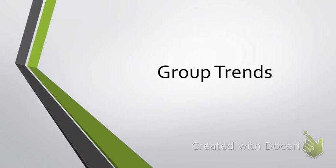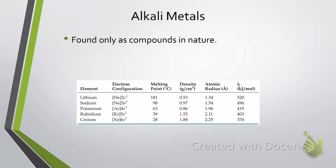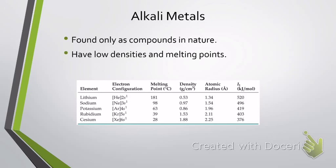Let's talk about some of the trends we can see between the different families. First up, we have the alkali metals — these are the ones from Group 1A. They tend to be soft, metallic solids, and their name actually comes from the Arabic word for ash, because of the way they react with air and water. They are not found as elements in nature — they are always found in some type of compound because they are highly reactive with air and water.